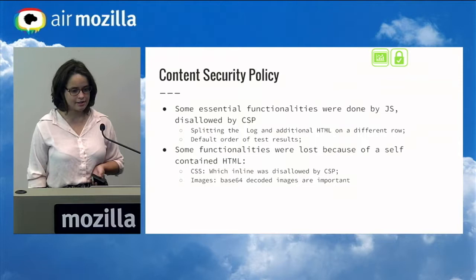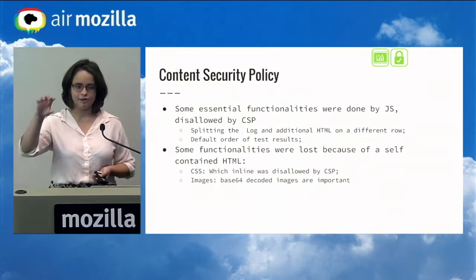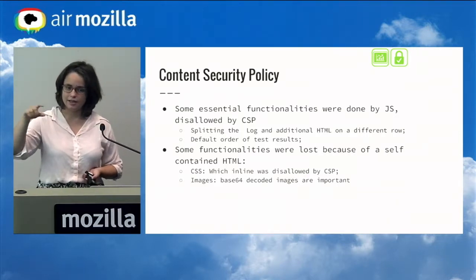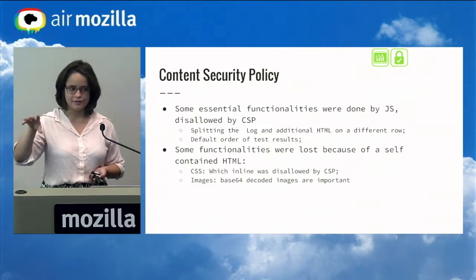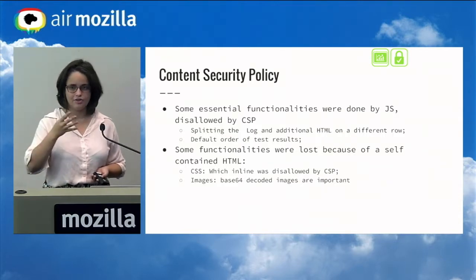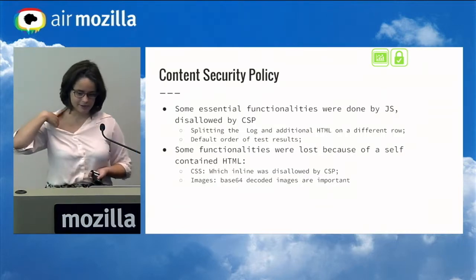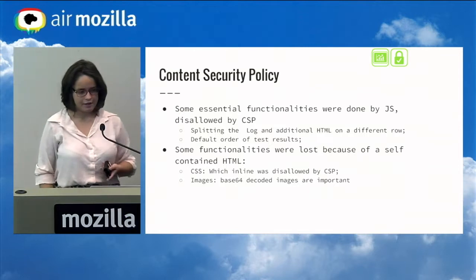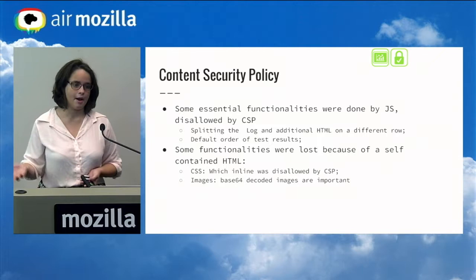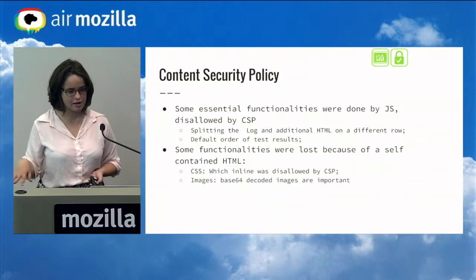Some essential functionalities of pytest-html were done by JavaScript, which is totally disallowed by the Content Security Policy of Jenkins — such as splitting the log and the additional HTML onto different rows, as you may see in the report. To solve that, I created that splitting in Python, so when the plugin creates the report it was already split, no longer done by JavaScript.